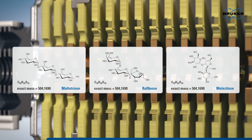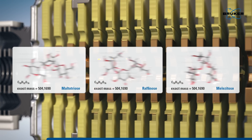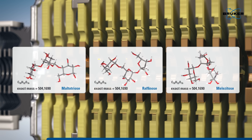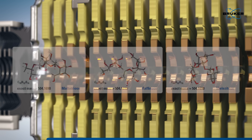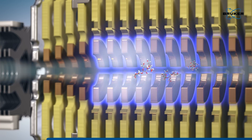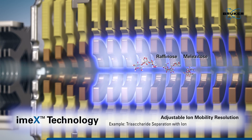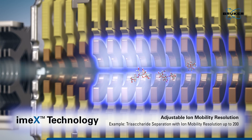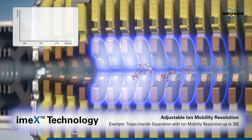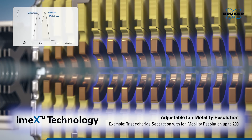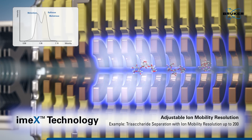Here we demonstrate how three isomeric trisaccharides are separated by TIMS. You can select different ion mobility resolution modes, investigate a wide mass range, or maximize ion mobility resolution to magnify peaks of special interest.